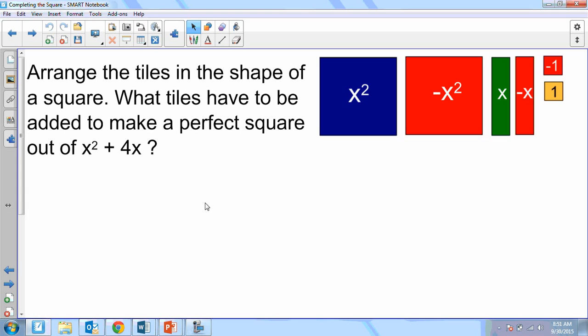And then we have some little ones. They're red on one side and kind of a beige color on the other side. Those are our positive and negative 1. Beige is positive and red is always going to be negative for us.